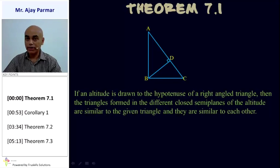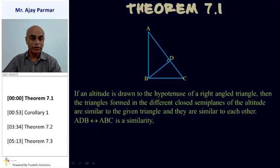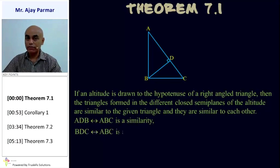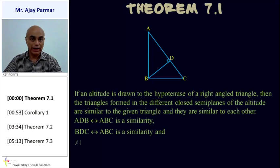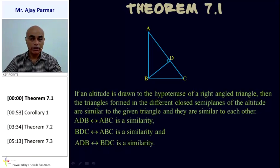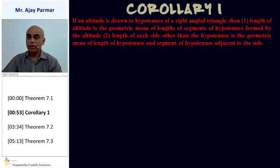Putting it mathematically: triangle ADB corresponds to triangle ABC is a similarity. Similarly, triangle BDC corresponds to triangle ABC is also a similarity, and therefore triangle ADB corresponds to triangle BDC is also a similarity. We don't need to prove this theorem — we will remember it as is without proof. But we have a corollary based on Theorem 7.1.